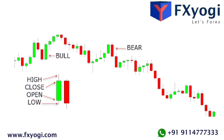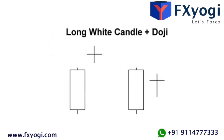Marubozu means there are no shadows from the bodies. The word marubozu translates to 'bald' or 'shaved' in Japanese. Depending on whether the candlestick's body is filled or hollow, the high and low are the same as its open or close. Check out the two types of marubozu.